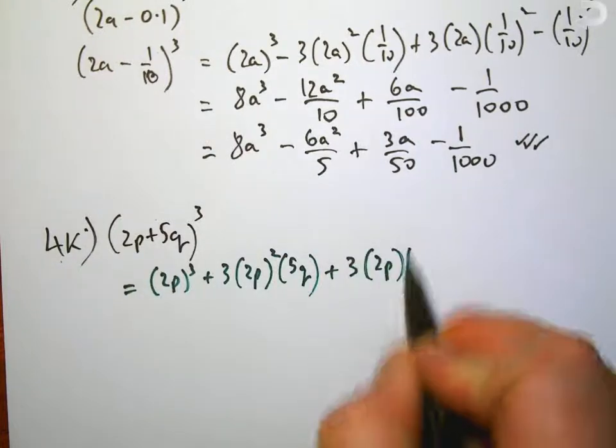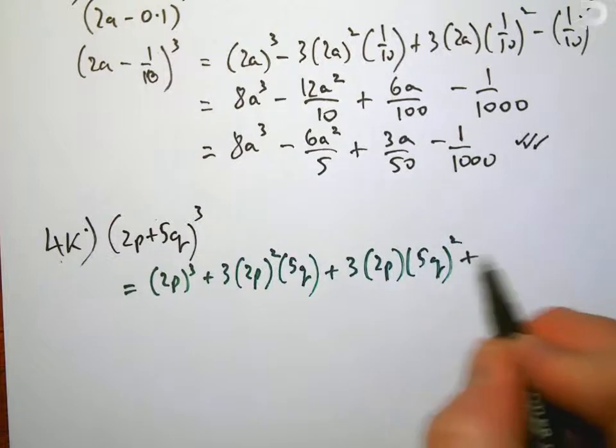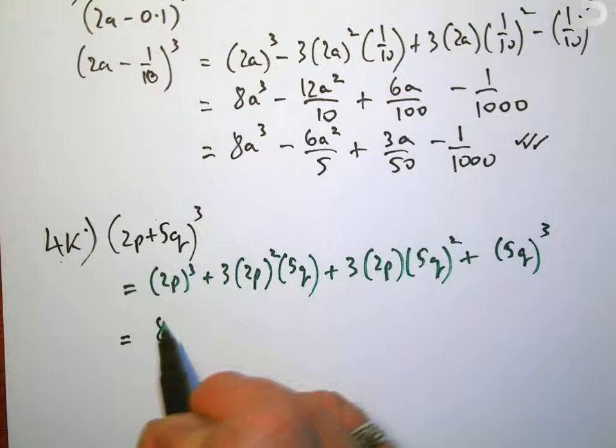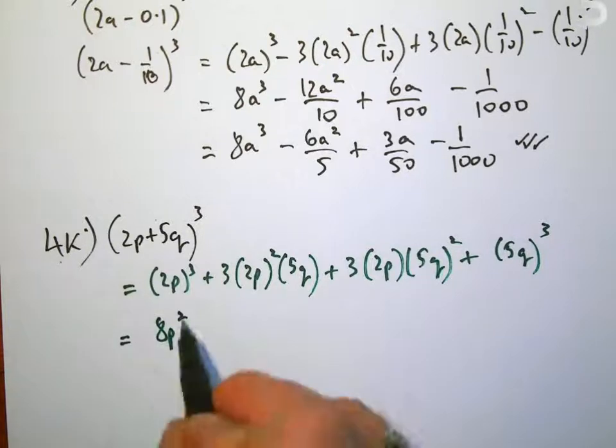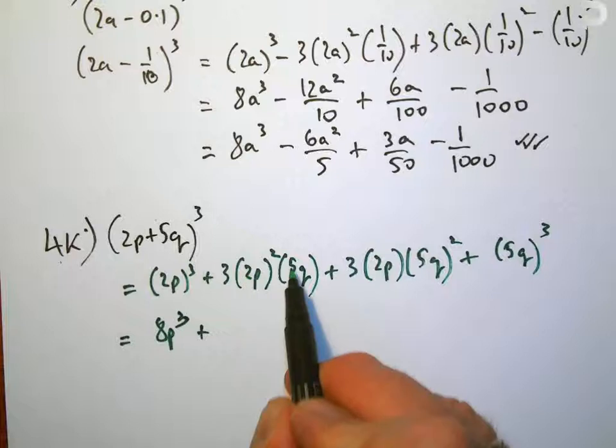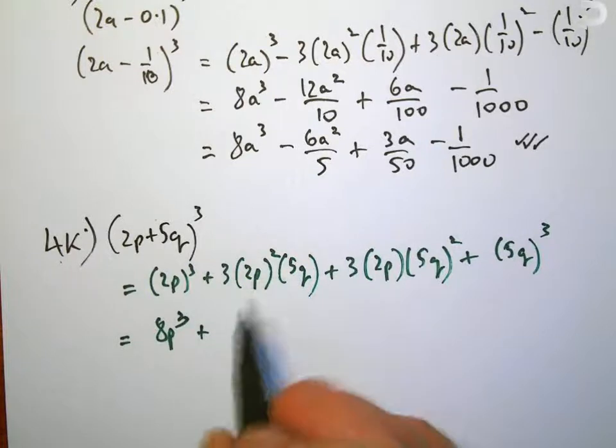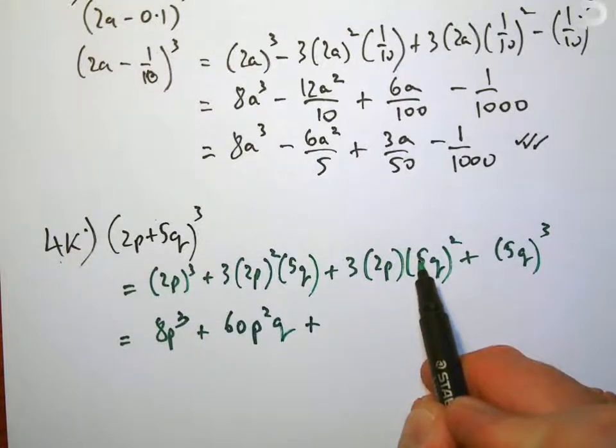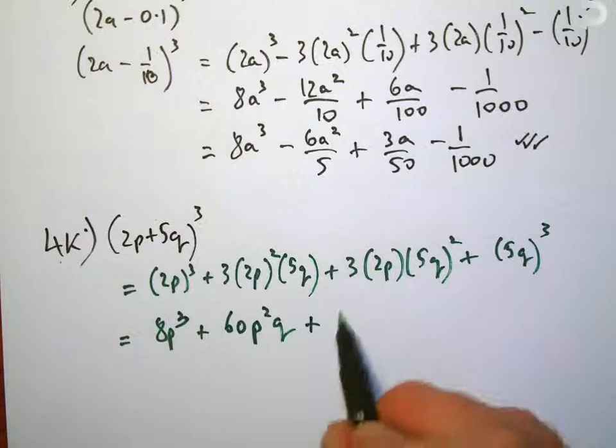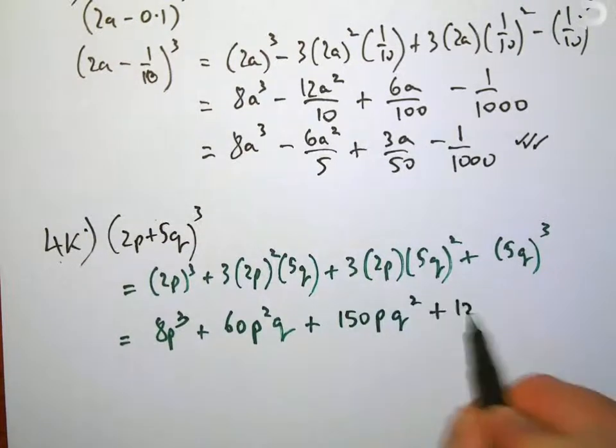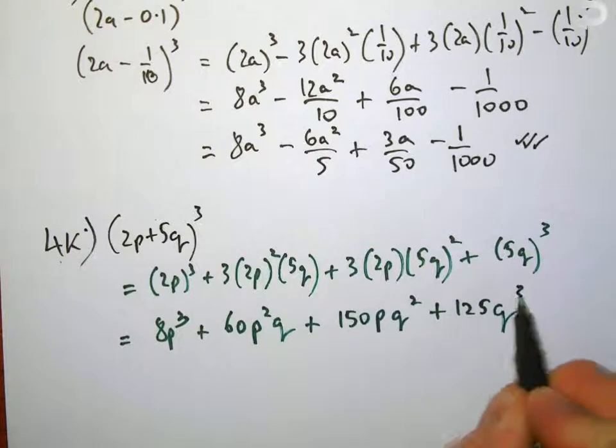Which will simplify to 8p³ + 2² is 4, 4 times 5 is 20, 3 times 20 is 60p²q + 5² is 25, 2 times 25 is 50, 3 times 50 is 150pq² + 125q³.